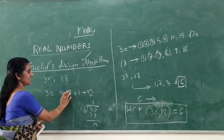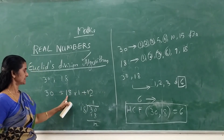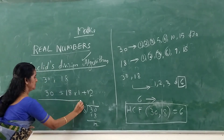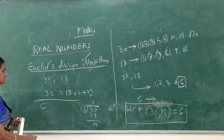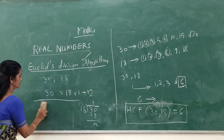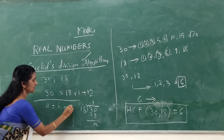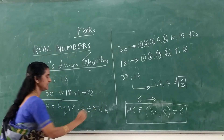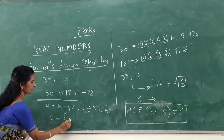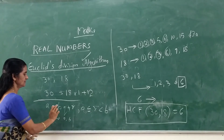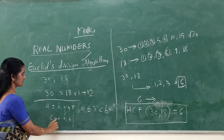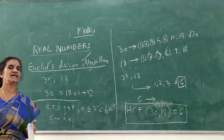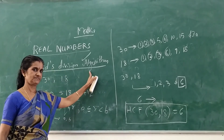Now, children, find the common factors of 18 and 12. We get the common factors of 18 and 12 are also 1, 2, 3, and 6. So we can say: if C is the common factor of A and B, then in the representation A = BQ + R, where 0 ≤ R < B, C is also the common factor of B and R. This result has its application in Euclid's Division Algorithm.